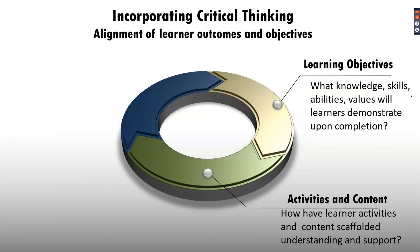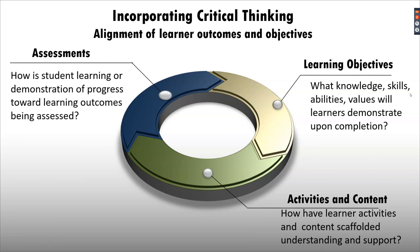Most of us will remember explicit instruction from our education classes in college. The main points are to use content scaffolding, use modeling, and then provide support while teaching the content — whatever topic you're embedding critical thinking in with your learning objectives. Then think about assessment: how are you going to decide if you've achieved the goals and seen progress toward those learning outcomes? What are you going to assess to determine if students have demonstrated progress toward those outcomes?